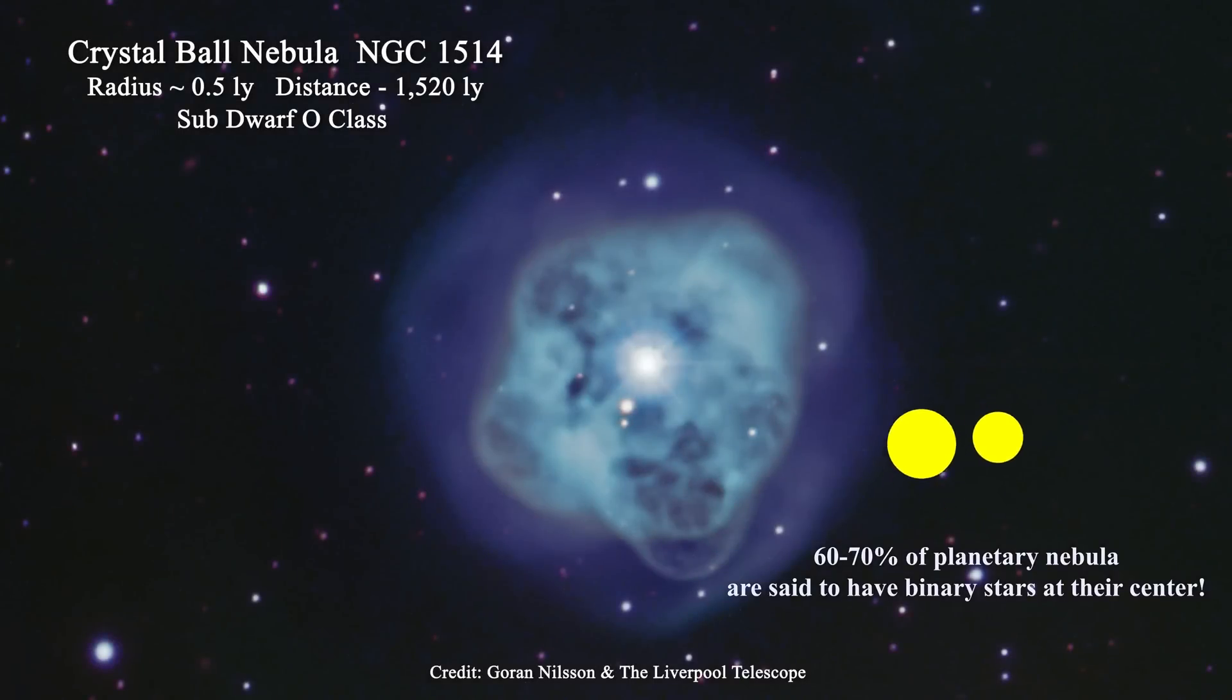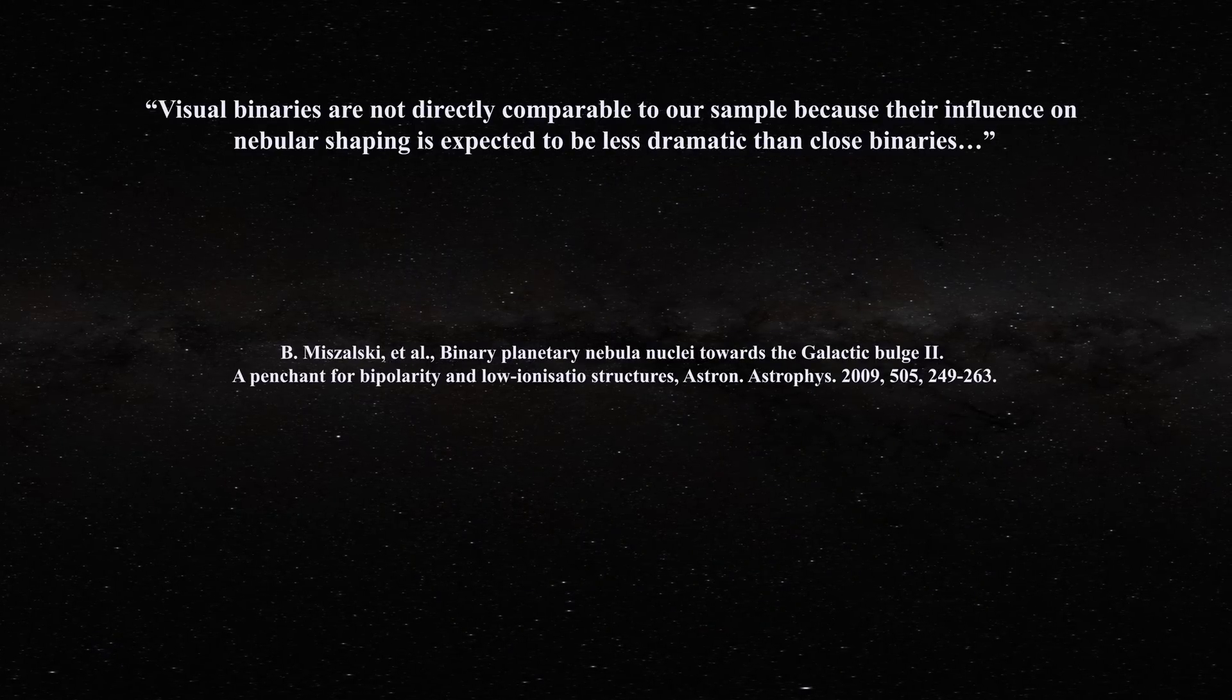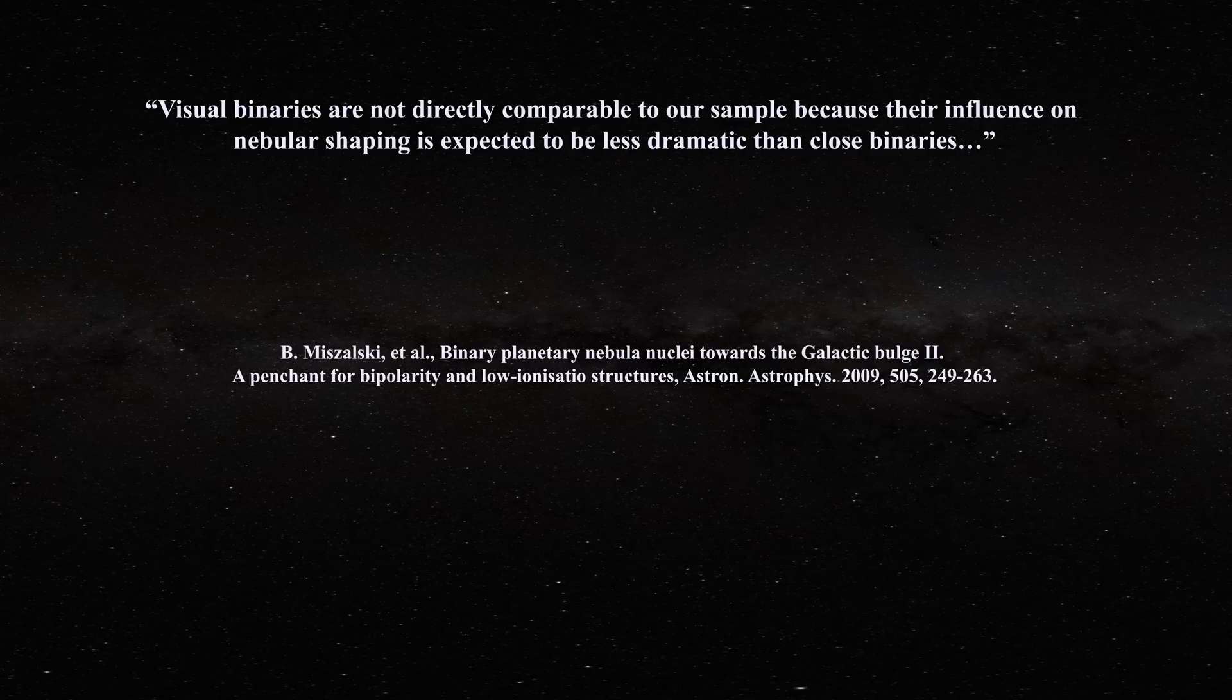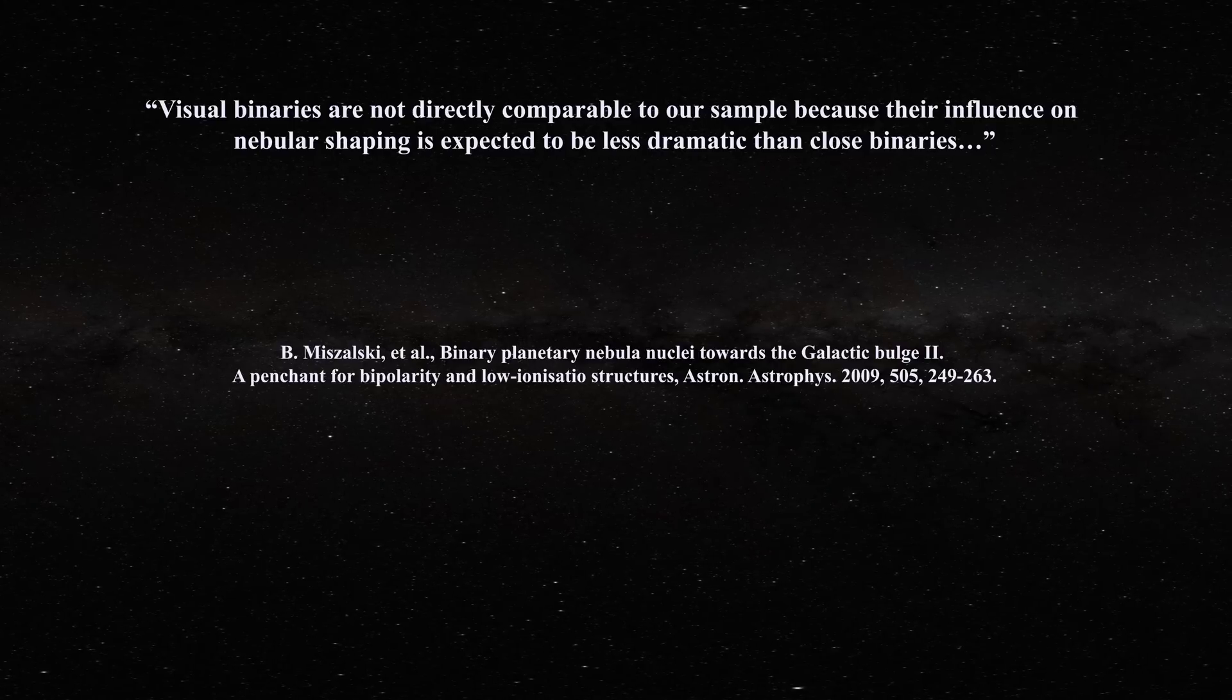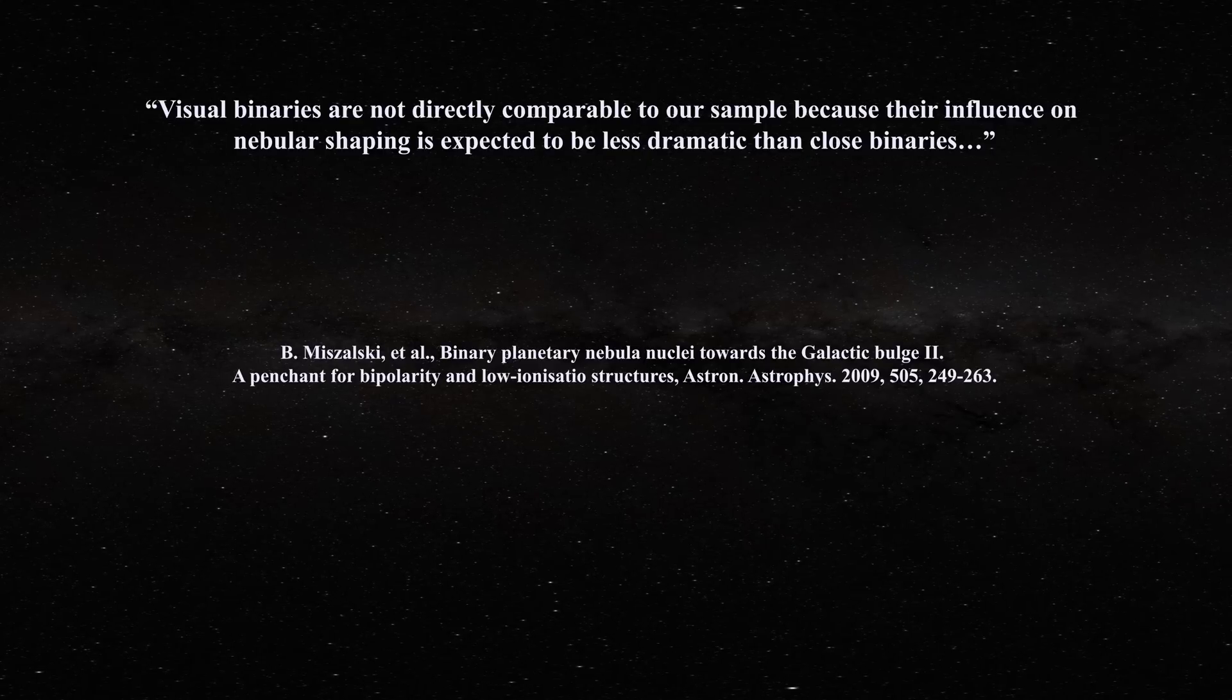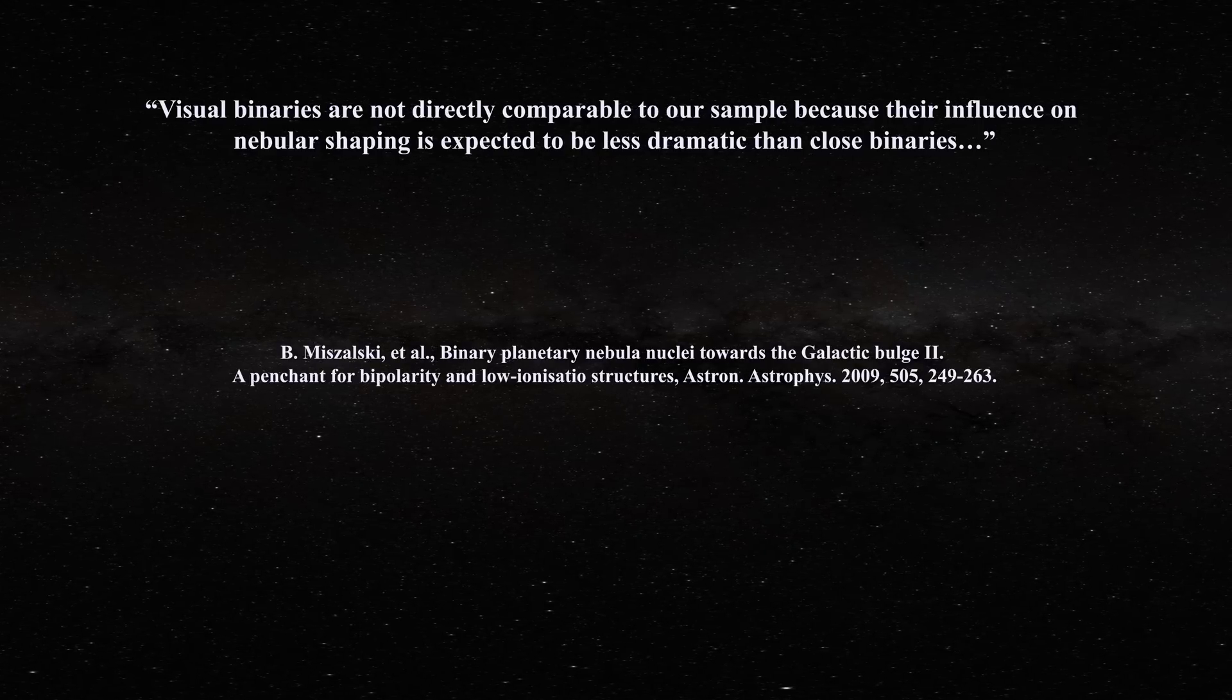Along these lines, though astronomers now require binaries to build up their nebular structure, these are never visual binaries. In the work by Ms. Zalke et al., they argue against such binaries in this way. Visual binaries are not directly comparable to our sample because their influence on nebular shaping is expected to be less dramatic than close binaries. They are saying that in order to have sufficient ability to shape the nebula, binary stars must be very close to one another. As a result, only one central star is ever observed. The other is merely hypothesized to be present.